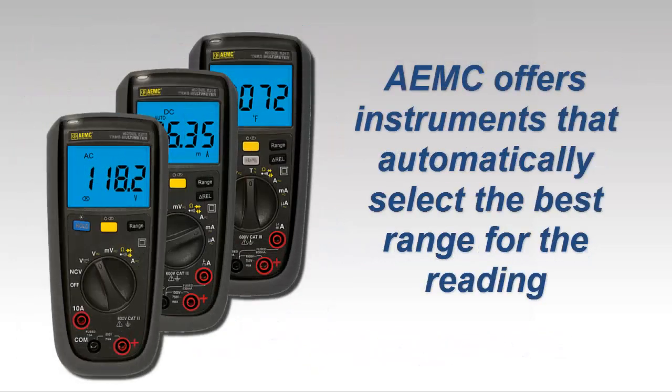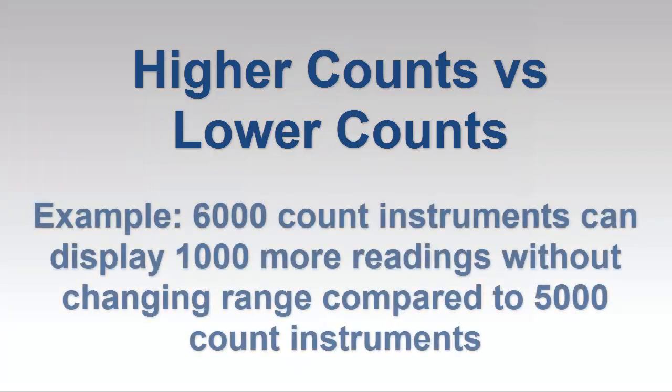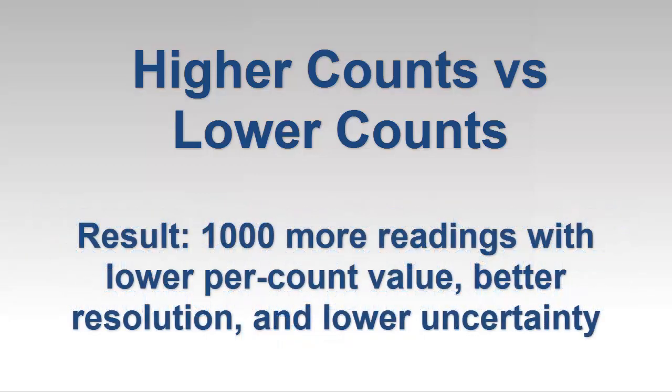AEMC features instruments, including multimeters, that perform auto-ranging for automatically selecting the most appropriate range for the reading. This also illustrates the advantage of higher count instruments. For example, a 6,000-count multimeter can display 1,000 more readings than a 5,000-count model without changing to the next higher range. Since these 1,000 additional readings will have a lower per-count unit value, they will result in a lower uncertainty.